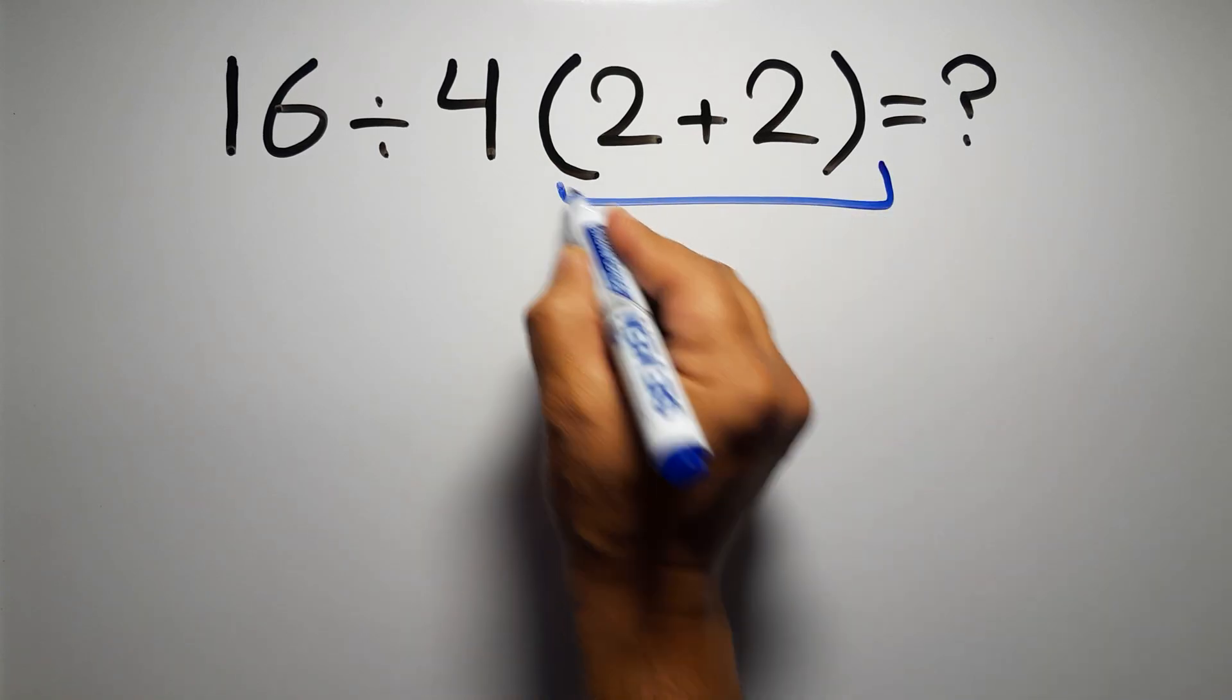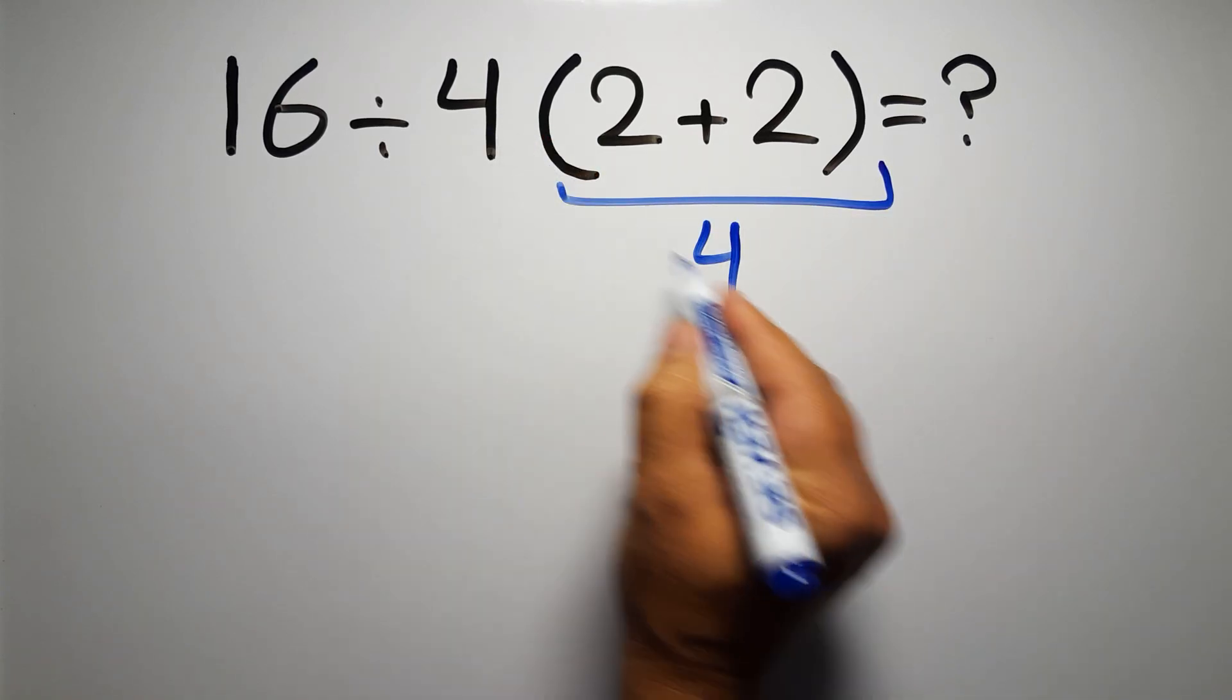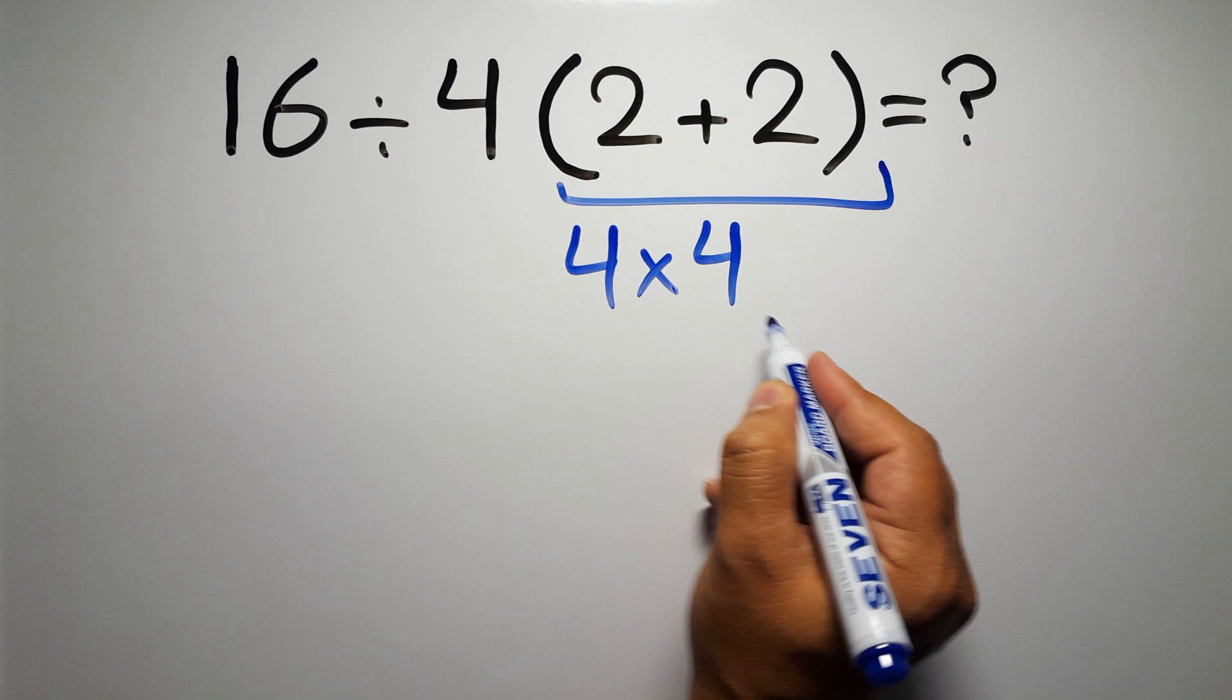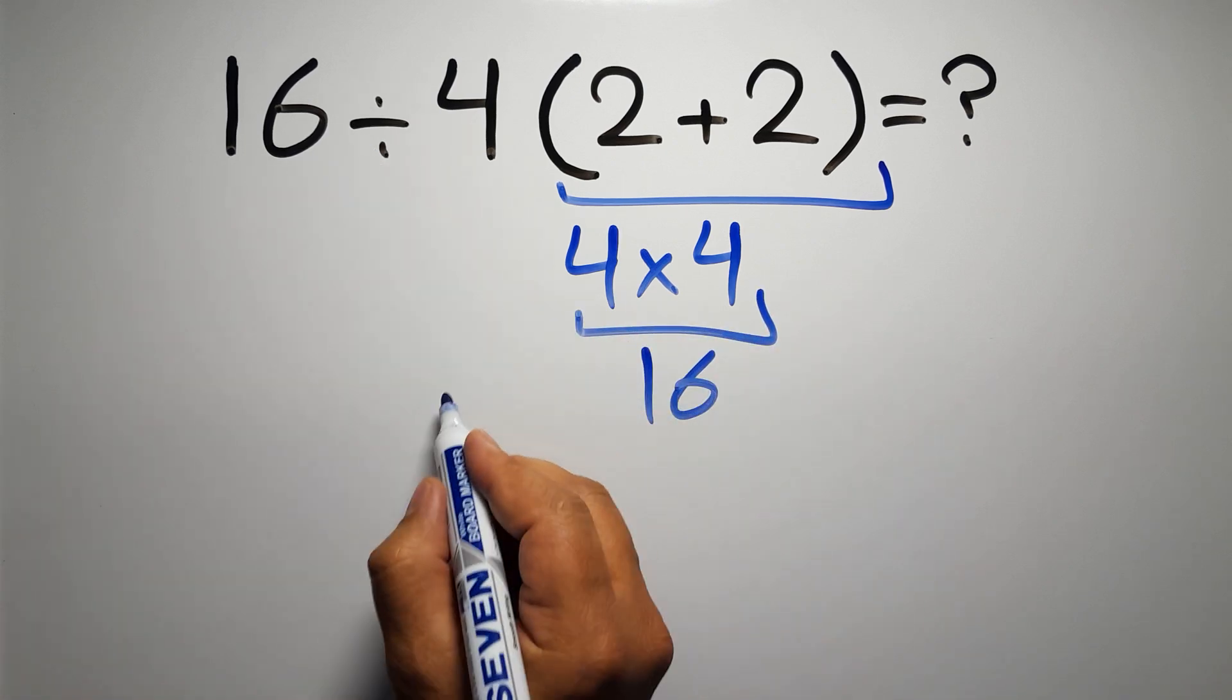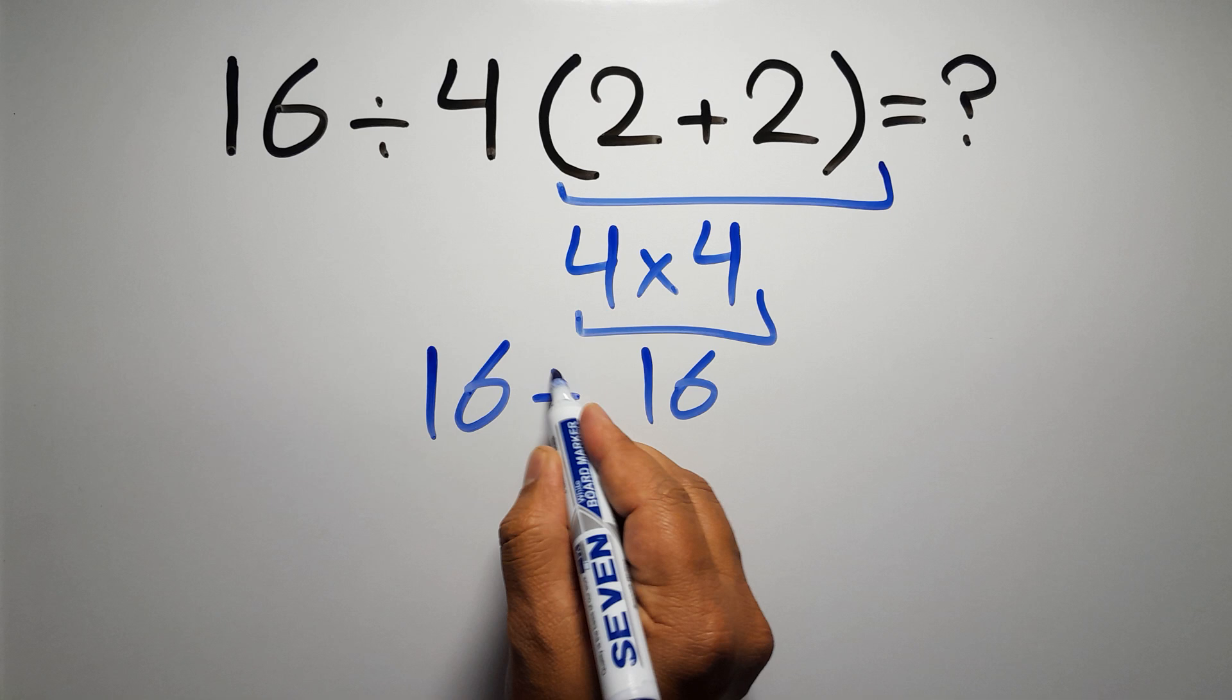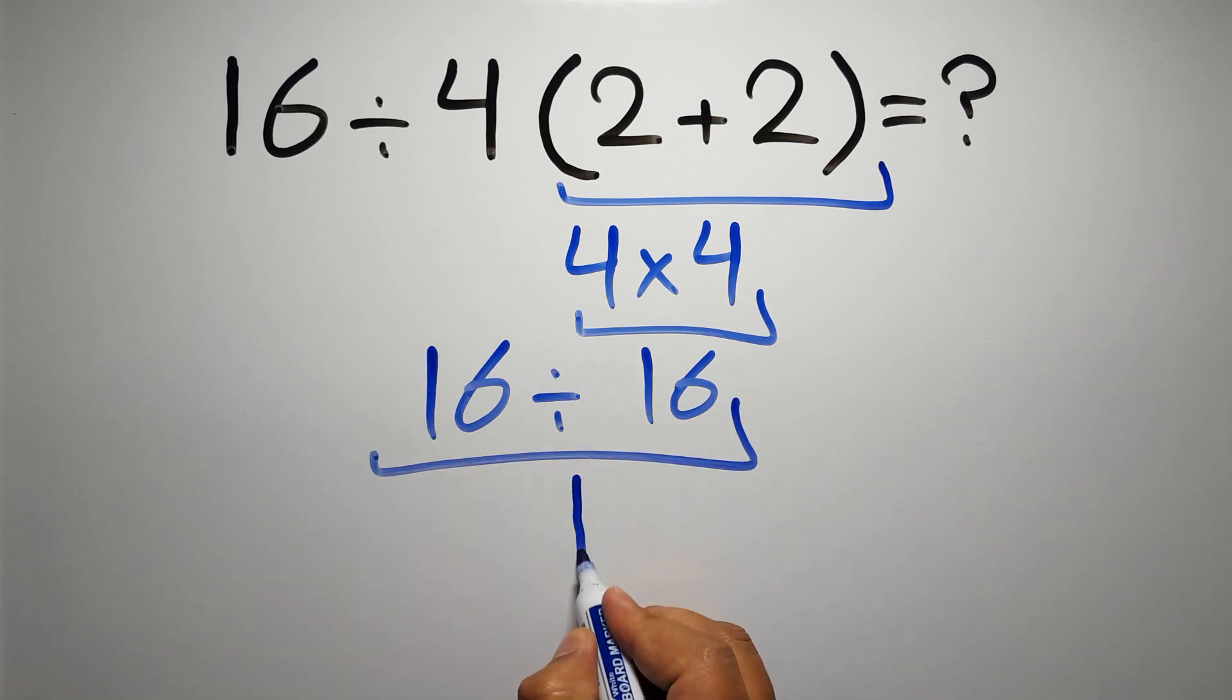2 plus 2 gives us 4, and 4 times 4 gives us 16, so 16 divided by 16 is just 1. But this answer is not correct.